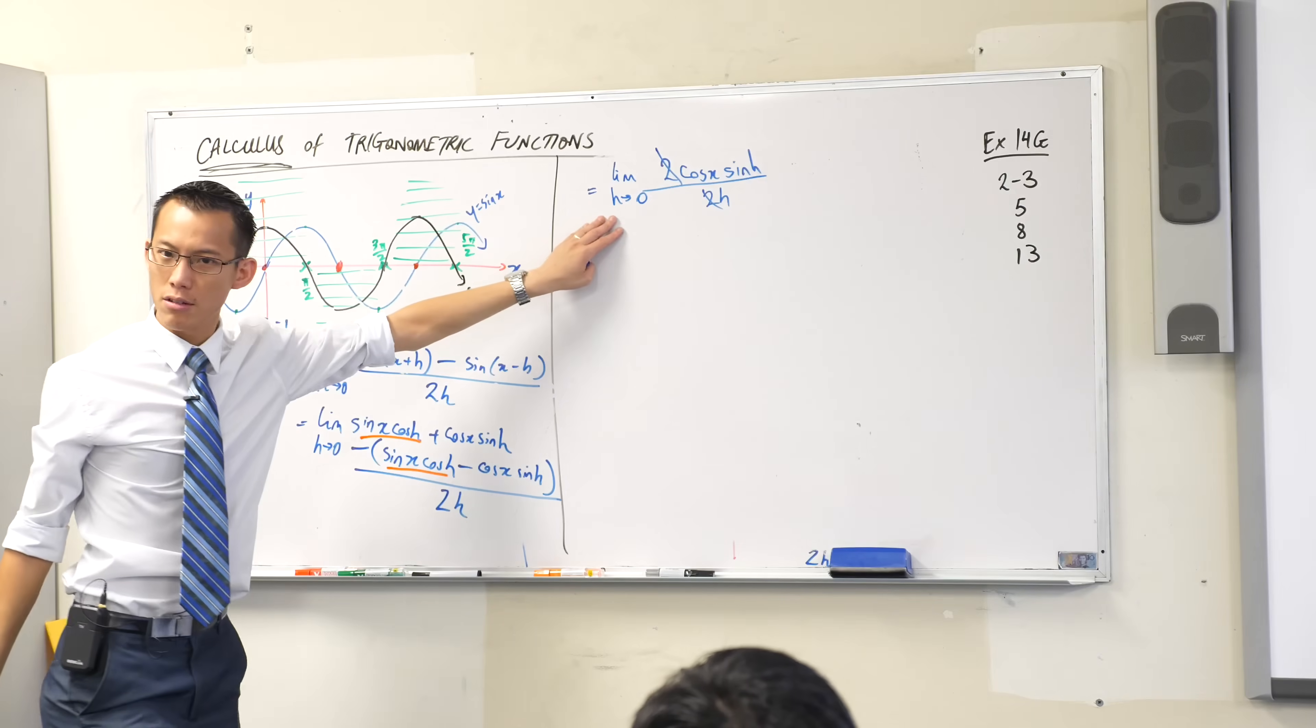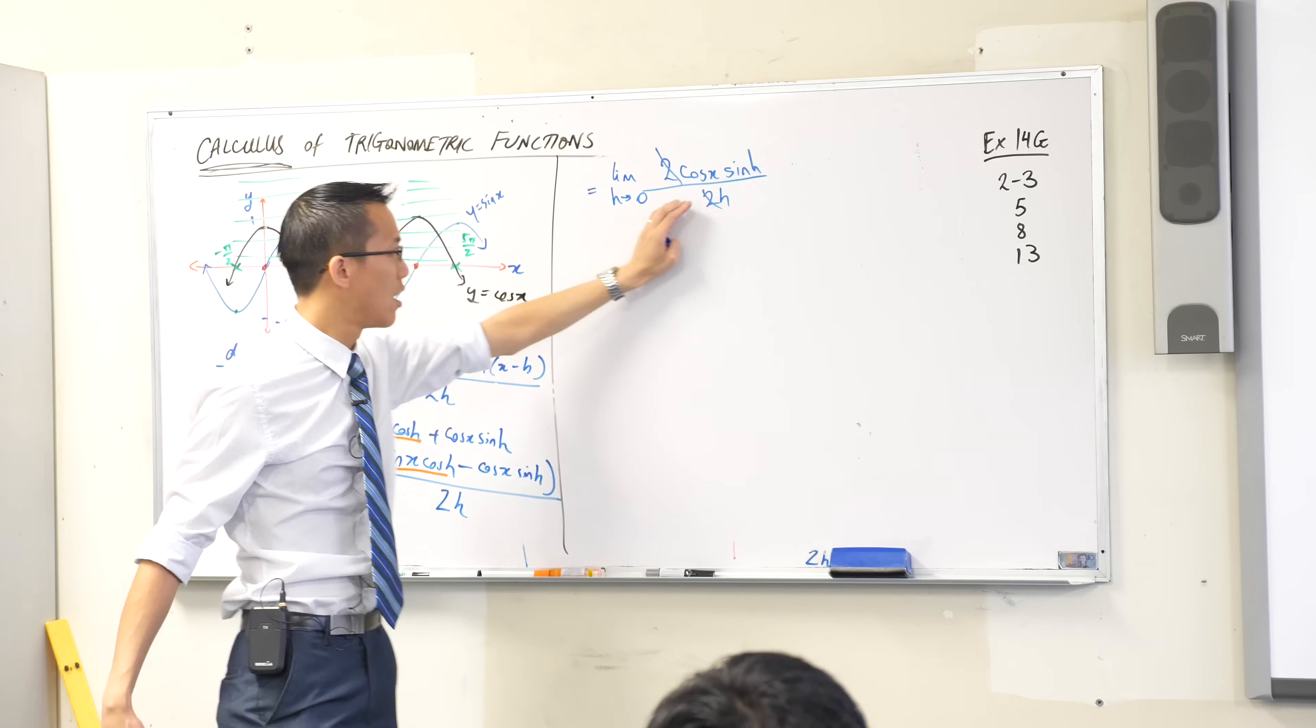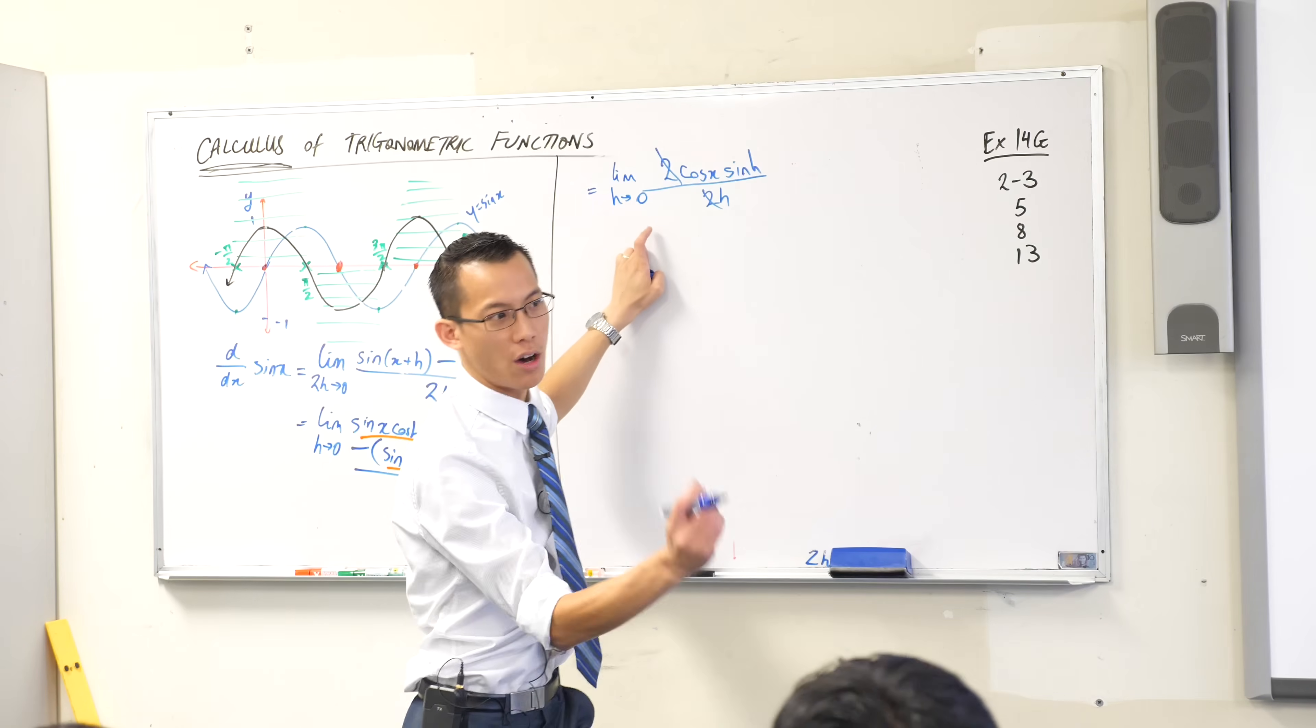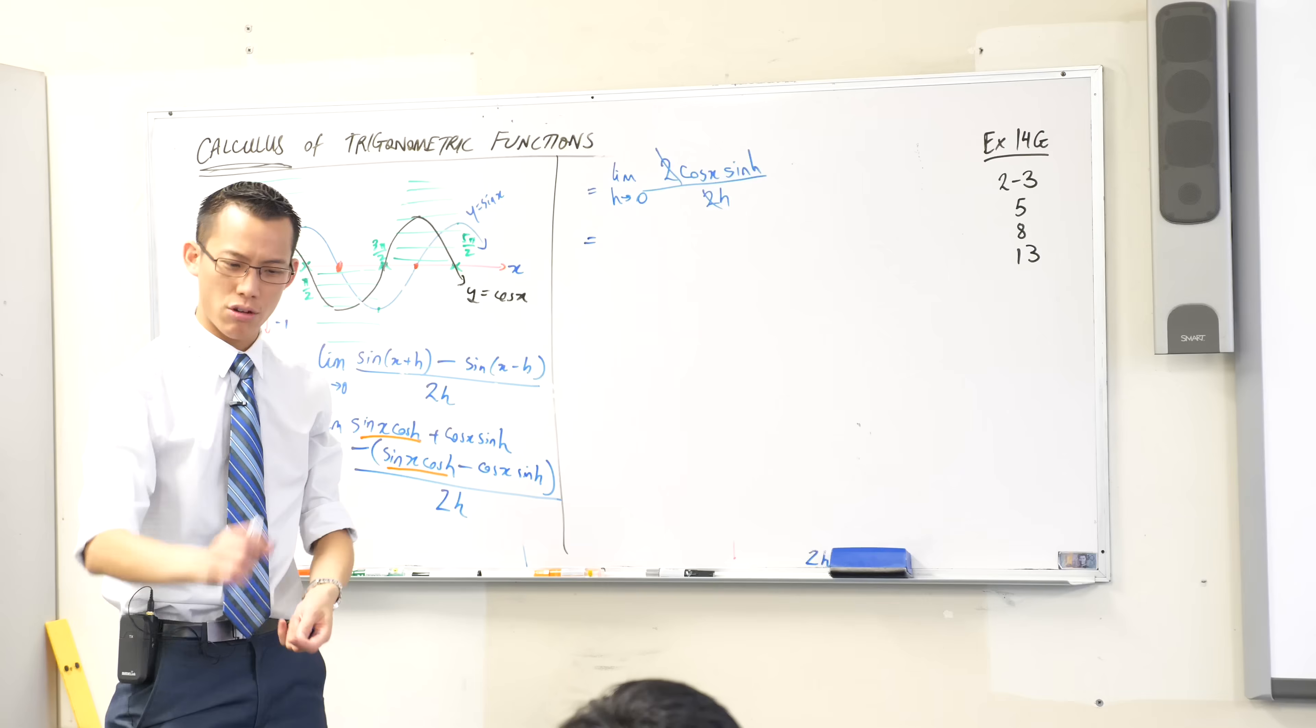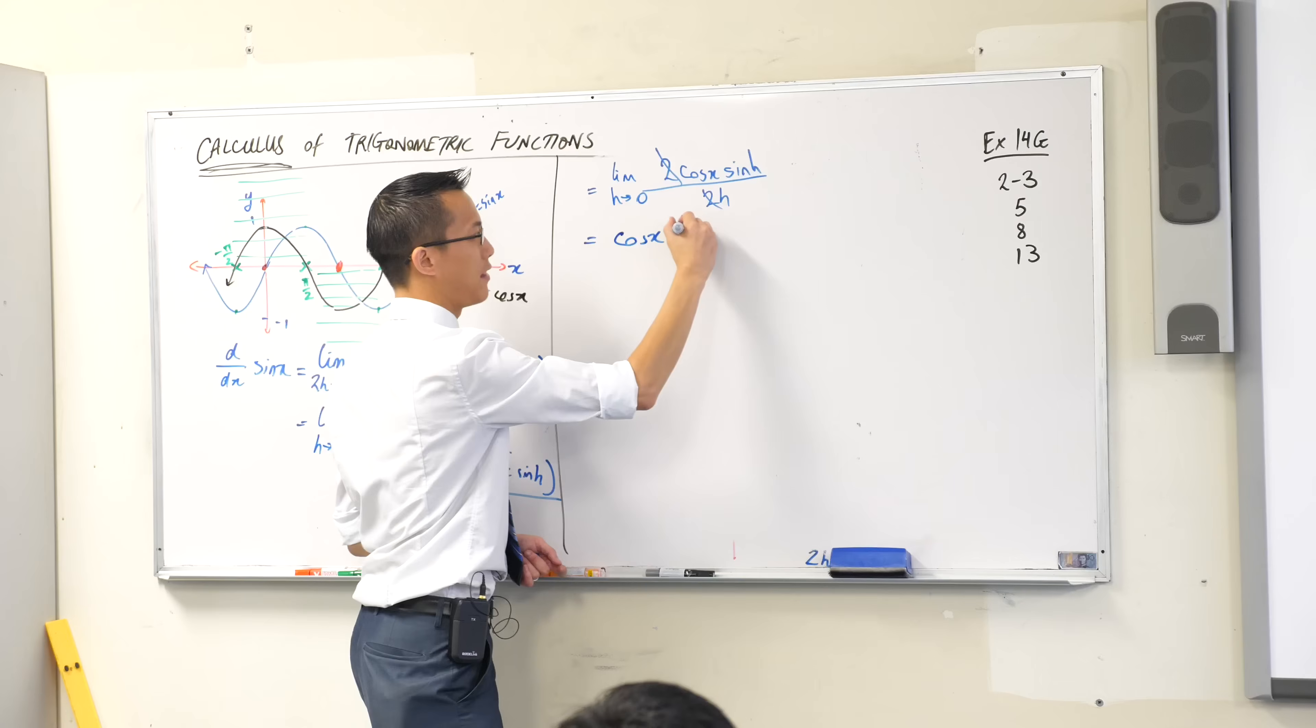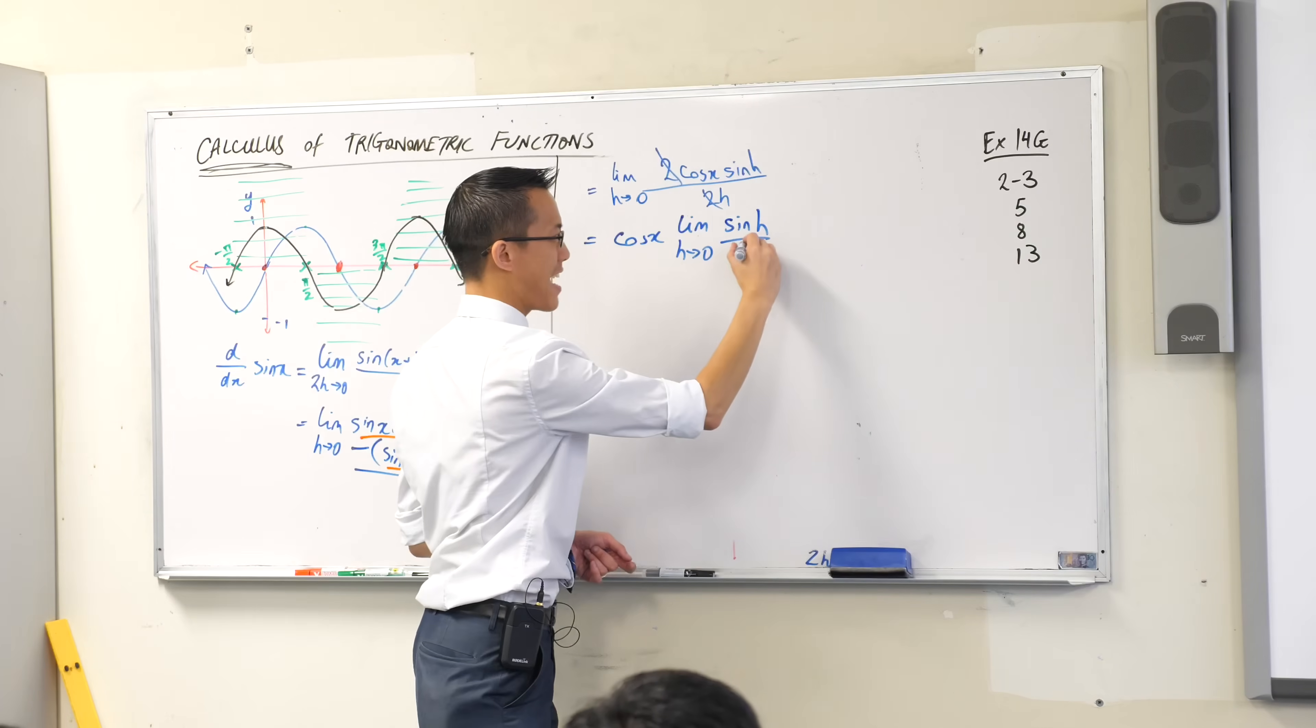This whole limit has to do with h. So, what happens to cos x when h changes? What does it care about the h? And the answer is, it doesn't care. It's independent of the h. So therefore, I can take it out. Just like in integration, there's a constant there. It's independent of what I'm integrating. So I'm going to factor that out, and then I'm left with this in the limit. Sine h on h.